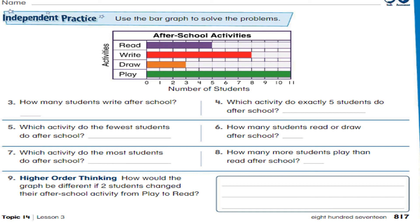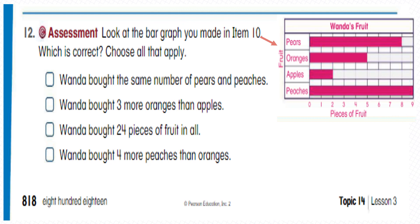The next page is independent practice. A bar graph is given — you have to read the bar graph and answer the questions below. For today's assessment, look at the bar graph in item 10. You have to consider the graph in question number 10, choose which statements are correct, and choose all that apply.